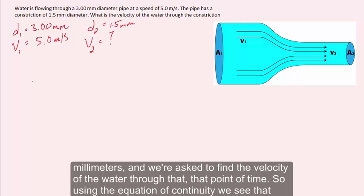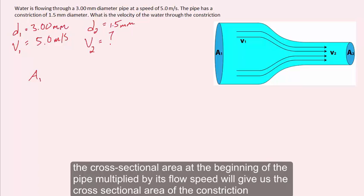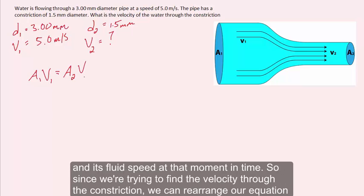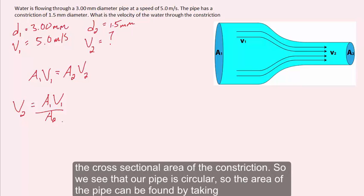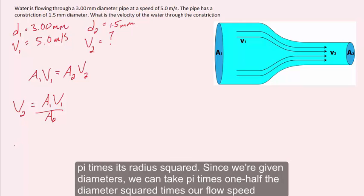Using the equation of continuity, the cross-sectional area at the beginning of the pipe multiplied by its flow speed equals the cross-sectional area of the constriction multiplied by its fluid speed. Since we are solving for the velocity through the constriction, we rearrange to get the velocity equal to the cross-sectional area at point 1 times its flow velocity divided by the cross-sectional area of the constriction. Since the pipe is circular, the area can be found by taking pi times the radius squared.